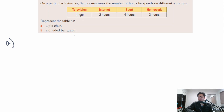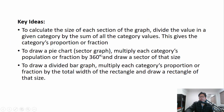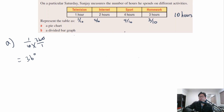First we need to find the total. We have 1 plus 2 is 3, plus 4 is 7, plus 3 is 10, so there's a total of 10 hours. That means television is 1 out of 10, internet is 2 out of 10, sport is 4 out of 10, and homework is 3 out of 10. Using this method, we take 1 over 10 times 360 degrees, which gives us 36 degrees. So for the television sector, it would be 36 degrees.